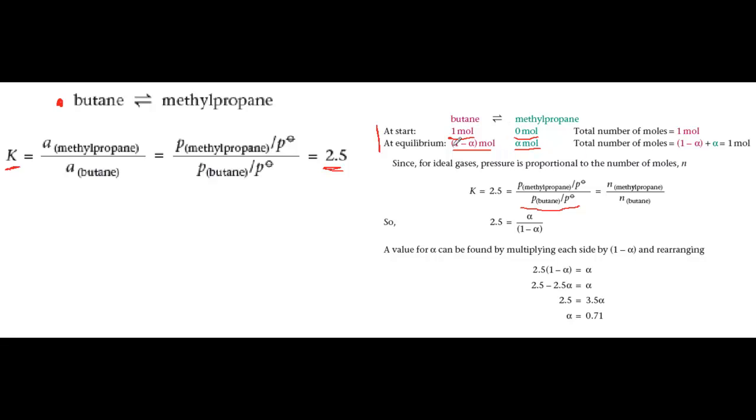And we get this expression. One minus alpha is the number of moles of reactant and that goes on the bottom and alpha moles is the amount of product and that goes on the top.